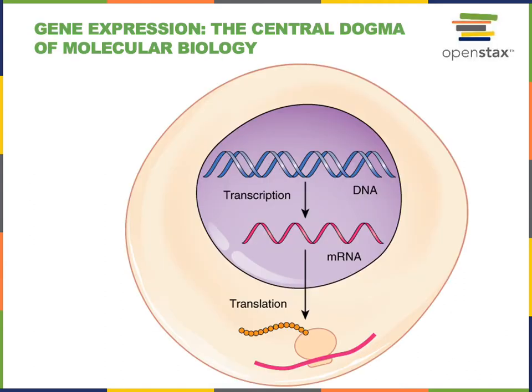Transcription is the synthesis of a strand of RNA that is complementary to a gene. Transcription occurs in the nucleus, and the resulting RNA produced can be a messenger RNA that will carry the information from DNA out of the nucleus in order to be translated by a ribosome to produce a protein.